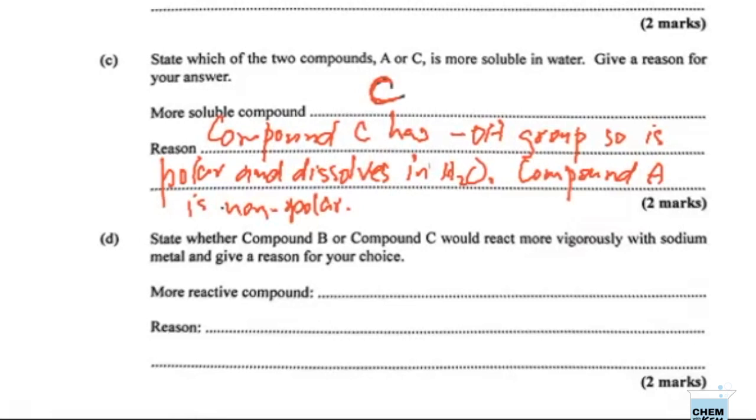Part D: State whether compound B or compound C would react more vigorously with sodium metal and give a reason for your choice. Both of them would react with sodium here. It comes down to which of them would let go of that hydrogen more readily. Compound B is a weak acid. Compound C can behave as an acid, but it's even weaker than compound B. So the one that would react more vigorously would be compound B.